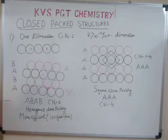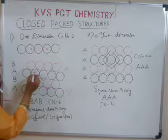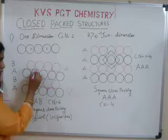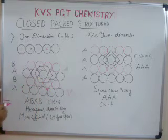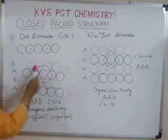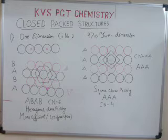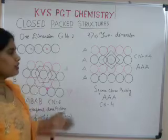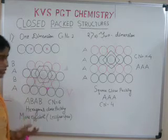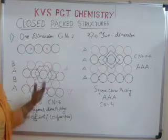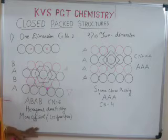Let us find the coordination number for ABAB packing. Drawing a line from the center of one sphere to the center of another sphere in this manner, we get a regular hexagon. So this type of packing is also called hexagonal close packing, and there are six spheres touching a sphere — so the coordination number is six. Hexagonal close packing is more efficient compared to square close packing because the empty space is maximally utilized. ABAB type of packing is also called hexagonal close packing; it is more efficient and there is less free space.